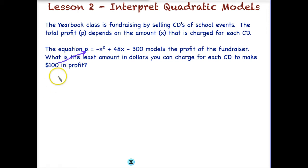We would have negative x squared plus 48x minus 300, and that is going to be equal to $100 in profit. So our goal is to solve for x, to figure out what x needs to be, and remember here x is what we are charging for each CD. So what does x need to be in order to have a profit of $100?